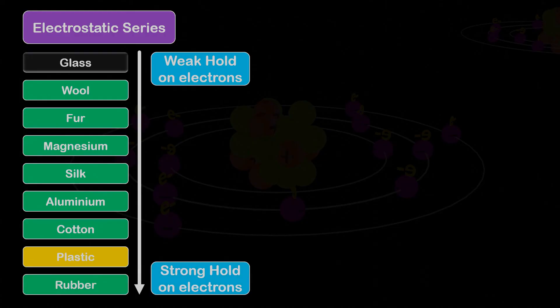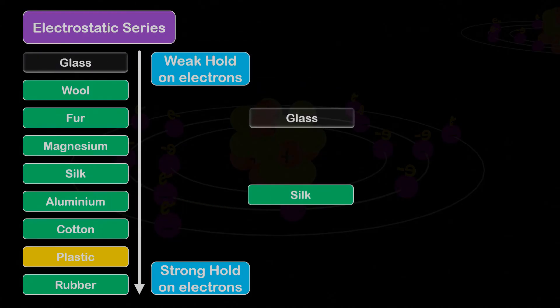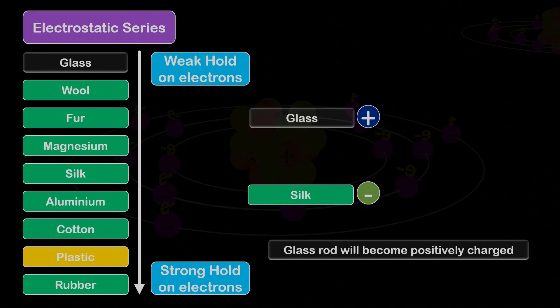Now with the help of this electrostatic series, we can find answer to our question. That, what type of charge will be acquired by glass and plastic rod after rubbing from the silk cloth. According to electrostatic series, if we rub glass and silk, the glass will easily give its electrons to the silk. The positive charge will come on the glass, and the negative charge will come onto the silk. Thus, the glass rod used will become positively charged.